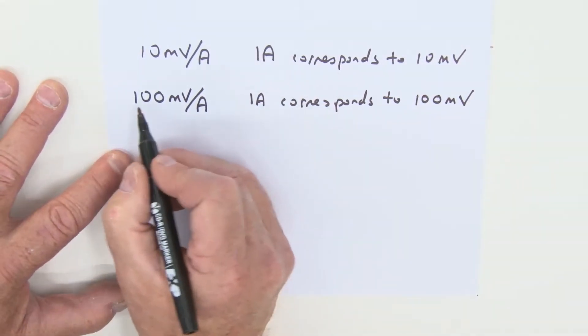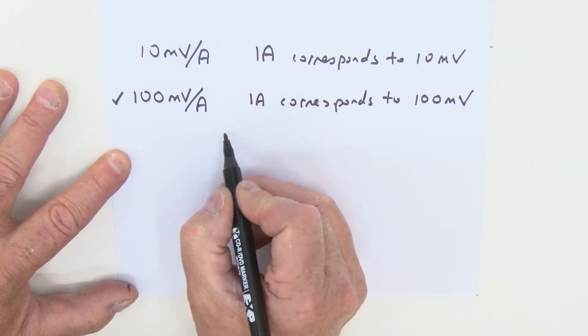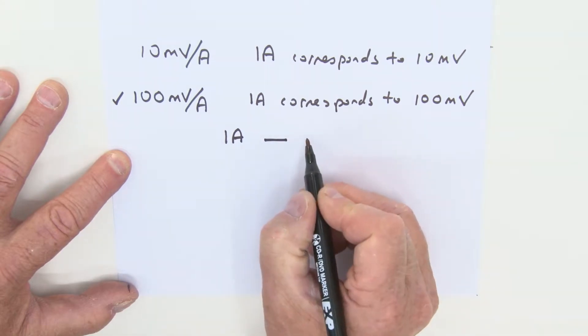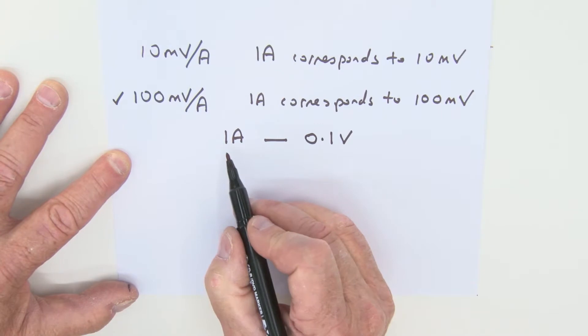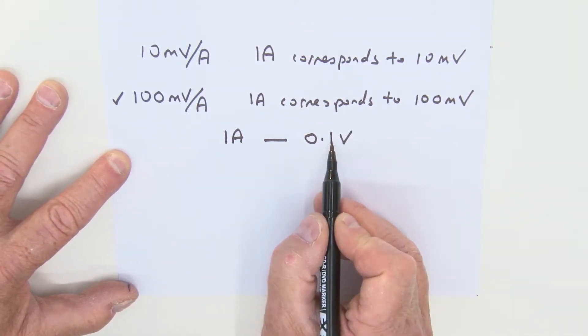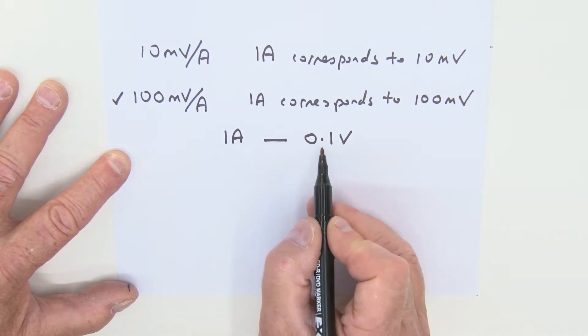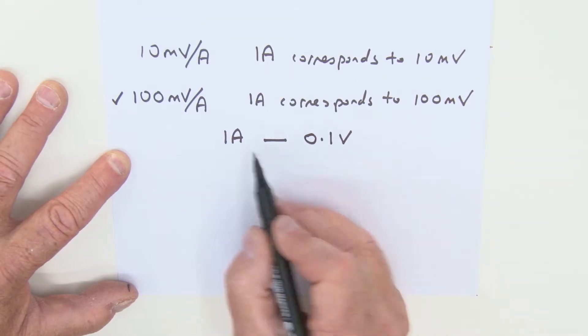So we're going to use this particular setting here. So in summary, what that really means is that one amp corresponds to 0.1 volts. There isn't a one to one ratio there. It is actually a 10 to one ratio. One amp corresponding to 0.1 volts. And we'll make note of that.